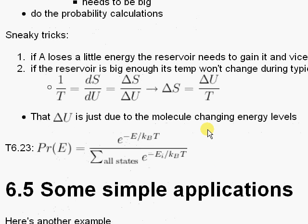There's a couple of sneaky math tricks here. First of all, if A loses a little bit of energy, the reservoir, of course, has to gain it. This is a system—energy can't just be lost. Okay, that's one of the sneaky math tricks. Another sneaky math trick is that if the reservoir is big enough, maybe you give it a little bit of energy, its temperature is not going to change.